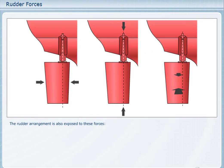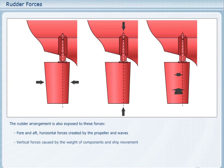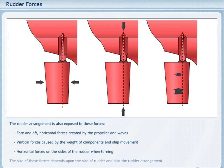The rudder arrangement is also exposed to these forces: fore and aft horizontal forces created by the propeller and waves, vertical forces caused by the weight of components and ship movement, and horizontal forces on the sides of the rudder when turning. The size of these forces depends upon the size of rudder and also the rudder arrangement.